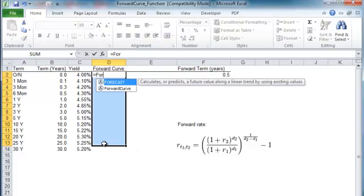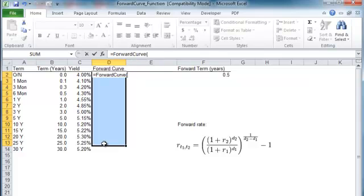It's just forward curve and then we have three parameters in the function. The first parameter is the forward term. So right now it's going to be equal to 0.5 or six months. We're going to lock that in and we're going to see how we can change that after and it will update dynamically.